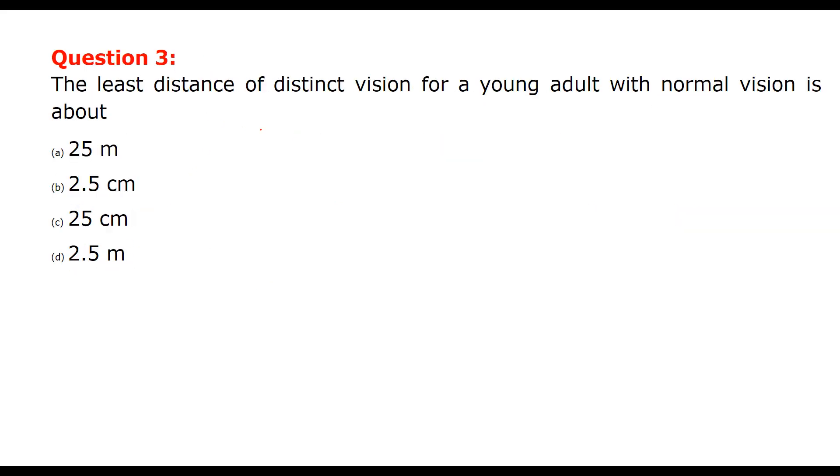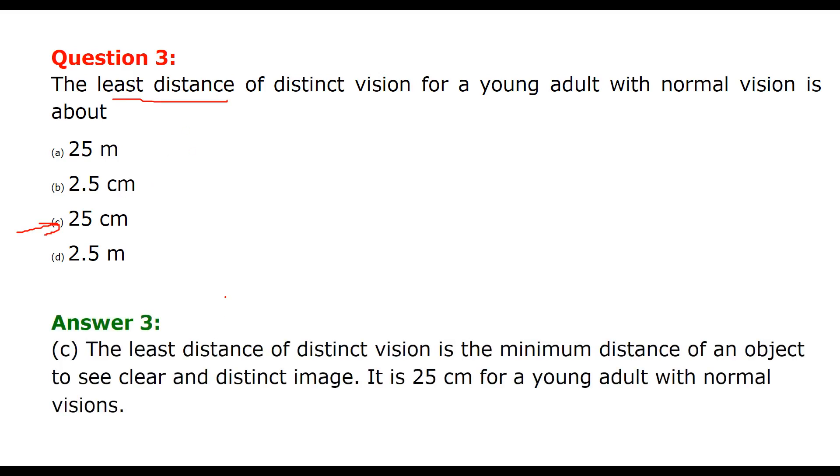The least distance of distinct vision for a young adult with normal vision is about - so we are being asked about the least distance. This is 25 centimeter, so we will choose C.